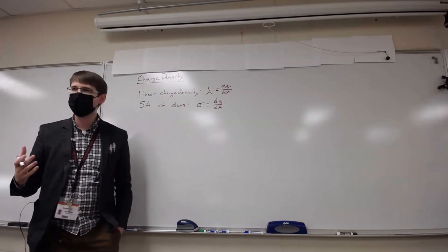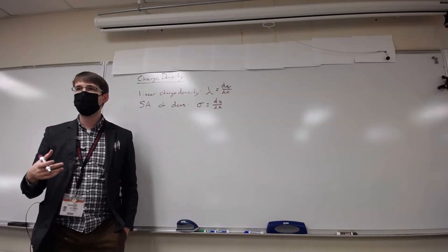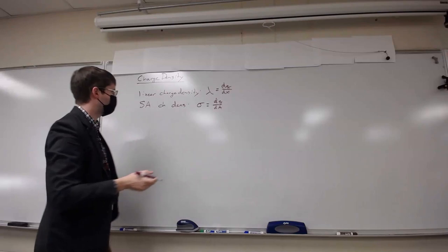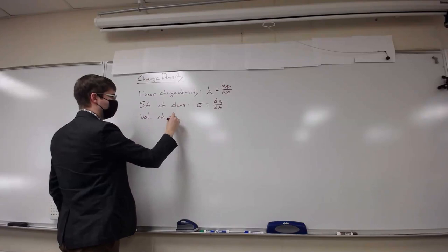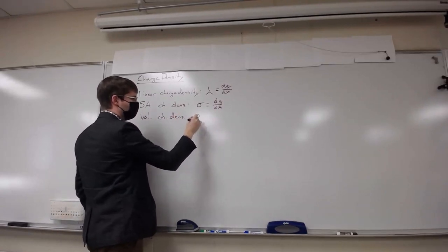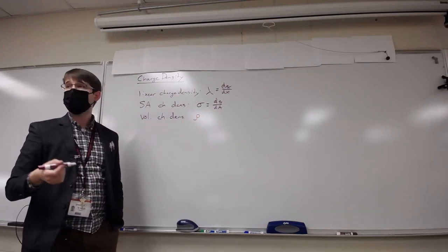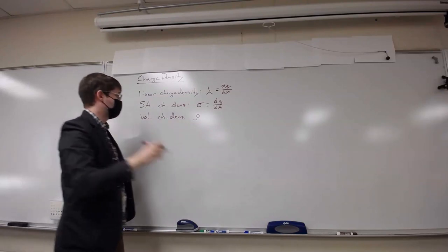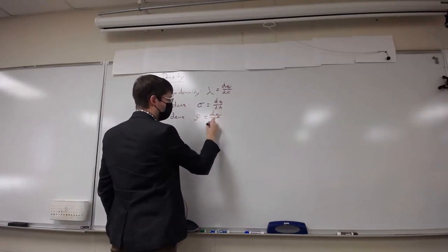The last one is volumetric charge density. This applies if you have a three-dimensional object with charge distributed throughout it. We use the symbol rho — it's a historical convention. Rho is dq/dV, the amount of charge per volume.